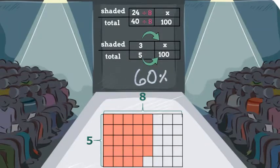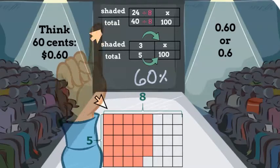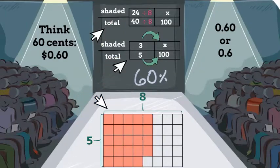To write 60 percent as a decimal, think how you would write 60 cents with a dollar sign. Yes, it's 0.60 or simply 0.6. Now let's review. We have our model, our ratio, our fraction, our percent, and our decimal.